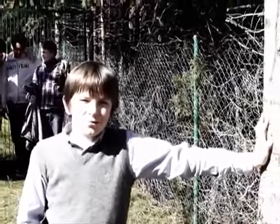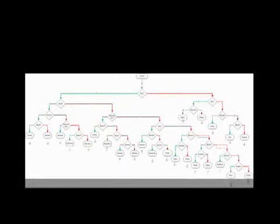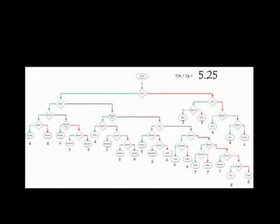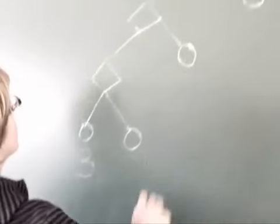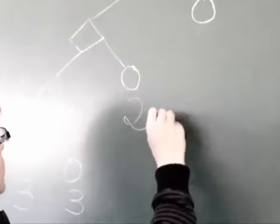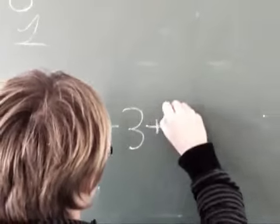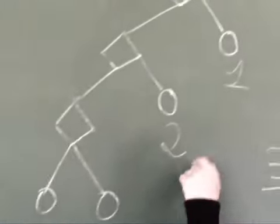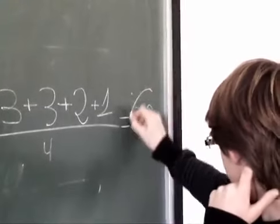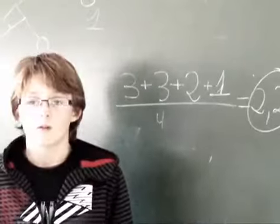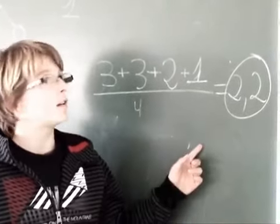Once the decision trees were built, we needed to know which one was the best. It's simple — the fastest tree is the best: the one that guesses the character using the fewest number of questions. We calculated the average number of questions asked with each tree, and that was the score of each tree.